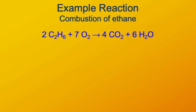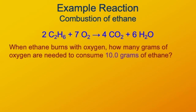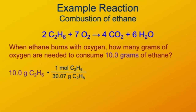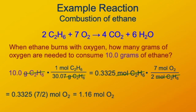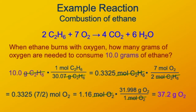Back to our combustion of ethane example: how many grams of oxygen do we need to consume 10 grams of ethane? Starting with 10 grams of ethane, one mole of ethane is 30.07 grams, so the grams cancel to give moles of ethane. Then we convert using 7 moles of oxygen per 2 moles of ethane, giving 1.16 moles of oxygen. Multiplying by the molar mass of oxygen, 31.999 g/mol, gives us 37.2 grams of oxygen required.